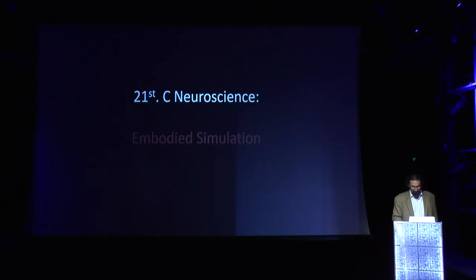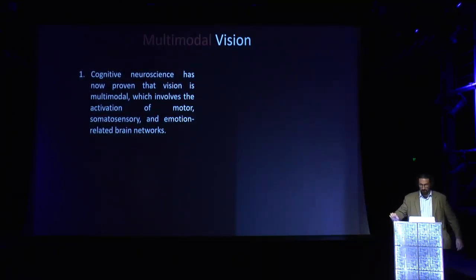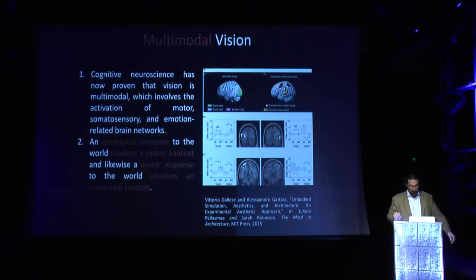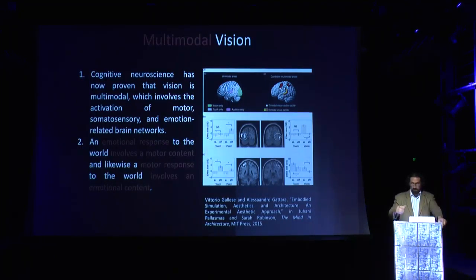The notion of embodied simulation really changed the game for me. Cognitive neuroscience has now proven that vision is multimodal — it involves the activation of motor, somatosensory, and emotion-related parts of the brain. This means that every act of vision is also accompanied by an emotional content, and vice versa — a motor content. The idea that perception is somehow a passive thing that happens to us is entirely outdated. Every act of perception involves an emotional response which in turn involves a part of the brain usually responsible for doing something.